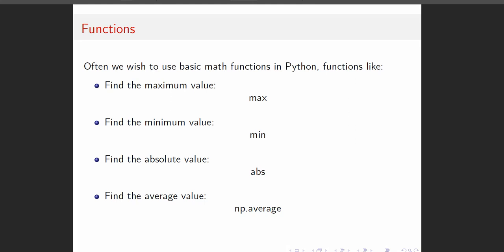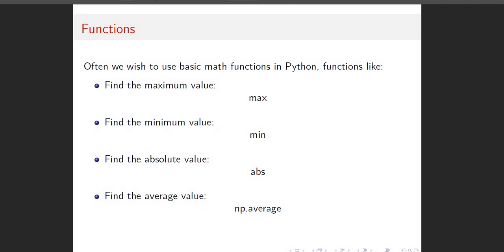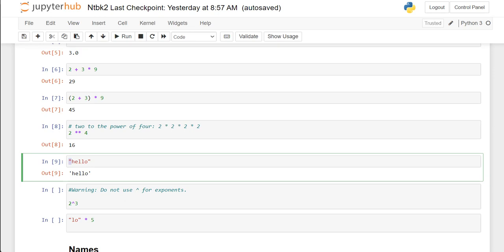We have a bunch of regular math functions like max, min, and abs for absolute value. Notice that we do need the numpy package for average — it's one we use a lot in this class. We also have to go into the numpy package for median. So it's np.average and np.median. It turns out that we also need numpy for special numbers like pi and e — we need np.pi and np.e, or Python doesn't know what we're talking about.